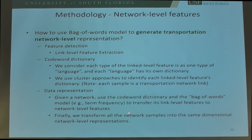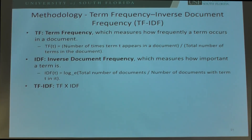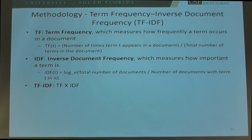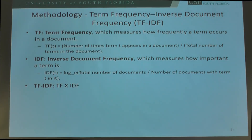After identifying the dictionary, we use the bag-of-words model to generate the data representation of each transportation network. Finally, we can transform all network samples into the same dimensional network-level representations. We actually use TF-IDF in our experiments — a combination of term frequency and inverse document frequency, also very popular in natural language processing.